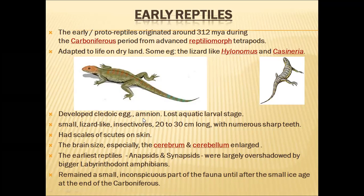Within the cleidoic egg, extra-embryonic membranes also developed. Amnion is very important — it creates a mini ocean inside the egg, because without a water body no organism can develop, and embryological development requires a water body. So a mini ocean is created inside this amnion, allowing the organism to develop in the embryonic stage. Reptiles also lost the aquatic larval stage — unlike amphibians whose larvae lived in water, directly from the eggs a baby reptile comes out.